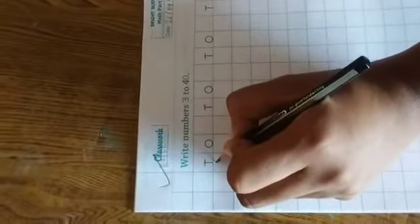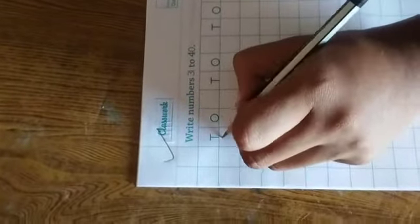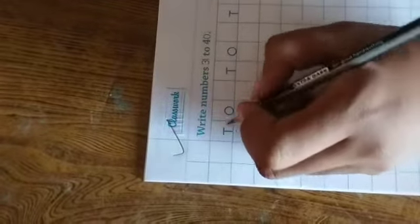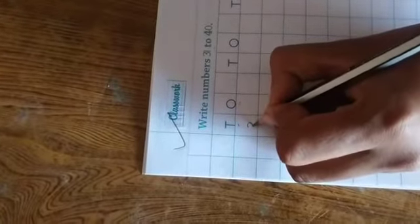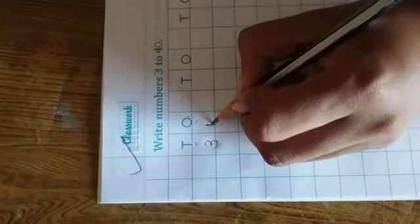T means tens, O means ones. So, 31. 3 is at the tens place and 1 is at the ones place. Okay, so 31.